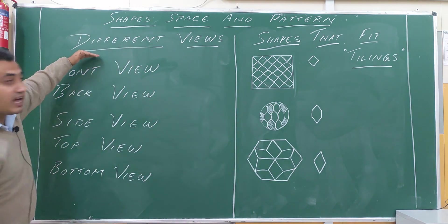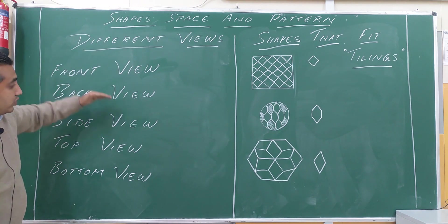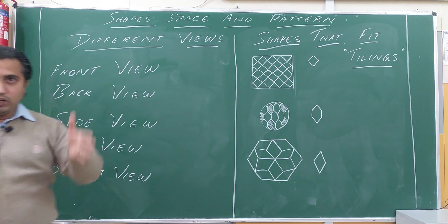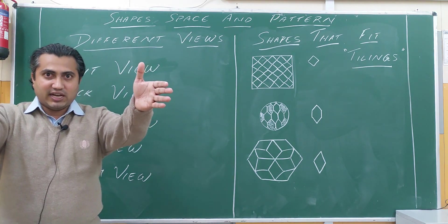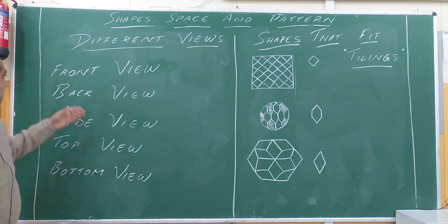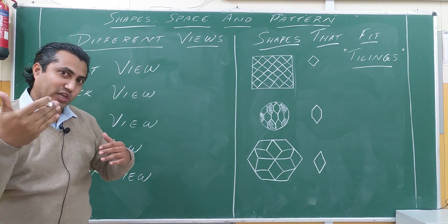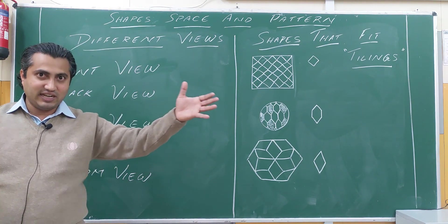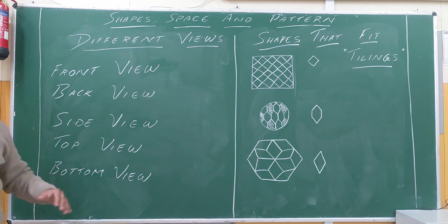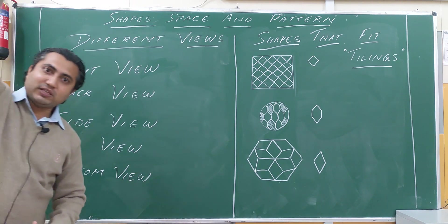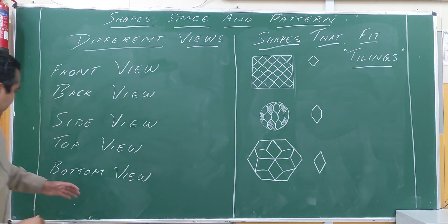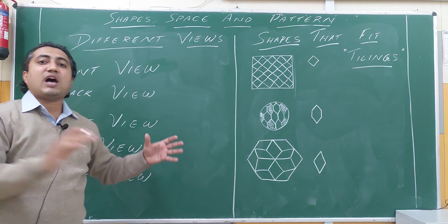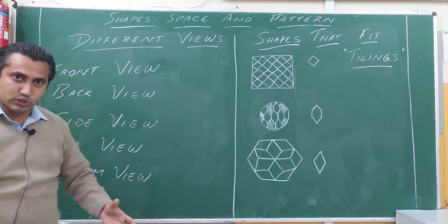Now we are going to discuss about the different views. Front view means the view from the front. Back view means the view from the back. Side view means the view from the side. Then top view — how it looks from above. Bottom view — how it looks from below. These are the different views.